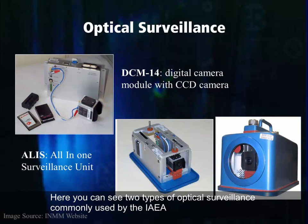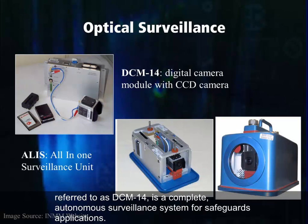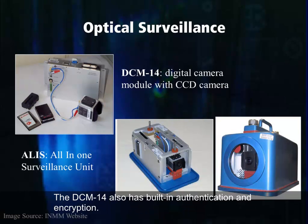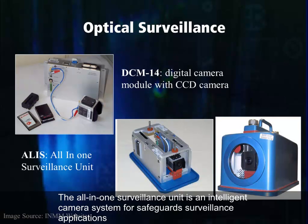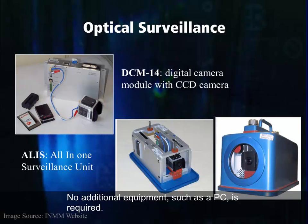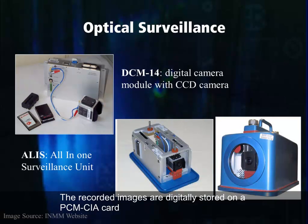Here you can see two types of optical surveillance commonly used by the IAEA. The Digital Camera Module 14, referred to as the DCM14, is a complete autonomous surveillance system for safeguards applications. By combining a CCD camera with the DCM14, the device will trigger the capture of an image for scene change detection and VACOS seals. The DCM14 also has built-in authentication and encryption. The all-in-one surveillance unit is an intelligent camera system for safeguards surveillance applications. The all-in-one camera system enables the user to perform a quick setup as required for a specific surveillance application. No additional equipment such as a PC is required. The all-in-one system can capture images at set intervals or using scene change detection, and the recorded images are digitally stored on a PCMCIA card.